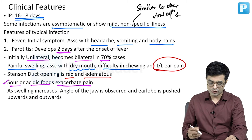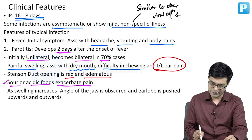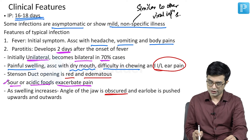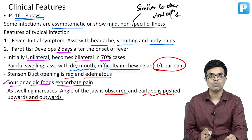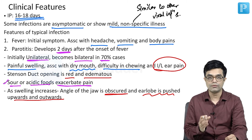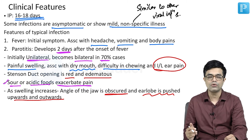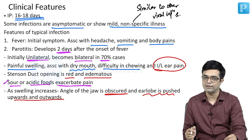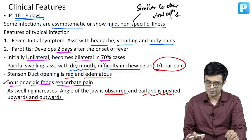As swelling increases in size, the angle of the jaw is obscured and the earlobe is pushed upwards and outwards. So the movement of the earlobe — outwards and upwards — is an important examination finding to remember.